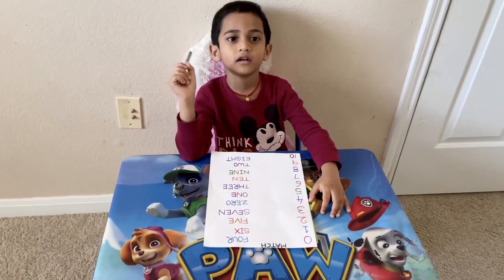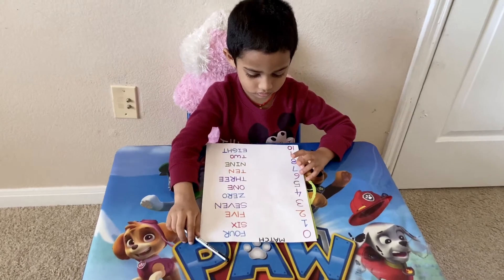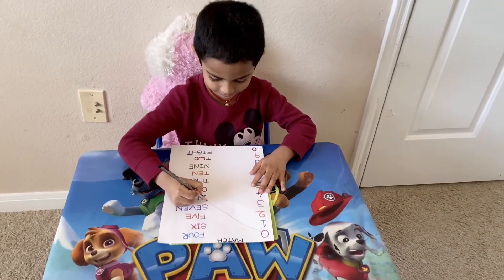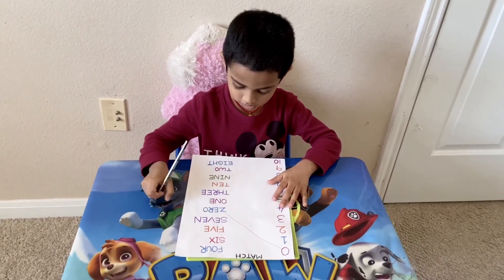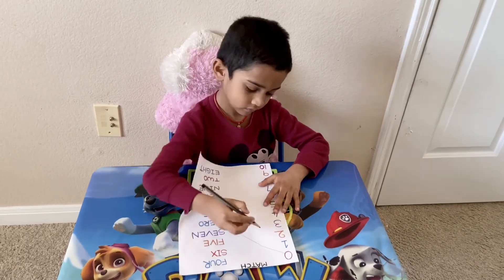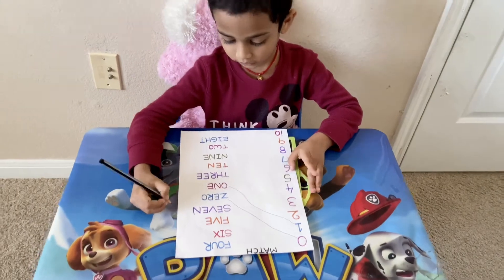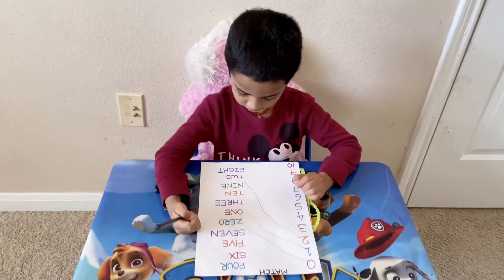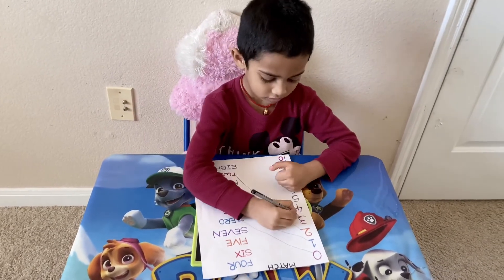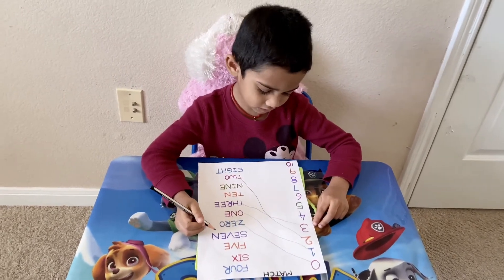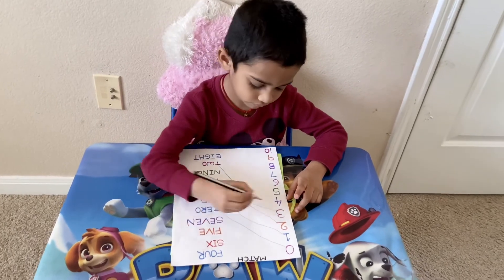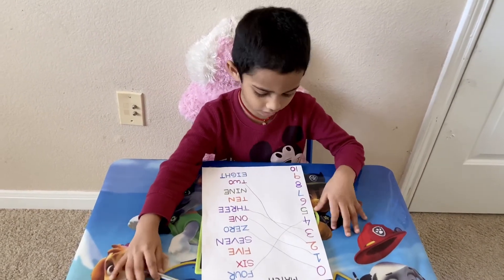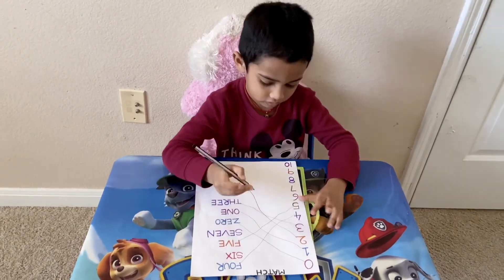The last activity is match the numbers with number words. Start — zero. Zero goes here. And 1 — 1 goes here, and it has the word 'one'. And 2 — 2 goes here. And now it's time for 3 — 3 goes here. And now after 3 is 4 — 4 goes here. And now it's time to put 5 here. And 6 has to go here.